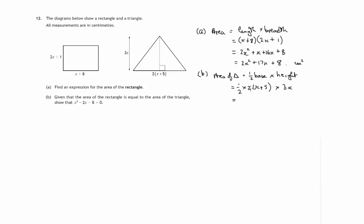Now a half of 2 is 1. So we've got 1 lot of x plus 5, not 2 lots. We've got half of 2 lots of x plus 5. So that's just x plus 5 and we're multiplying that by 3x.